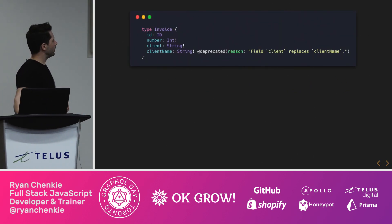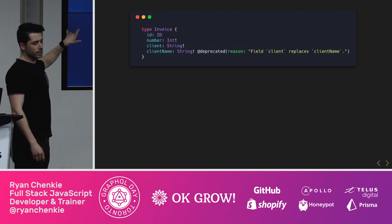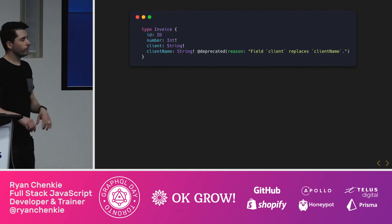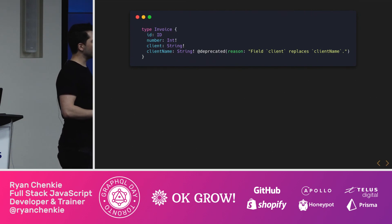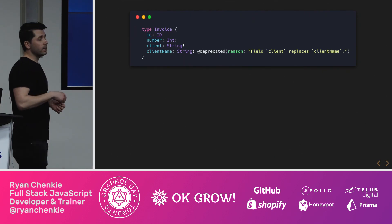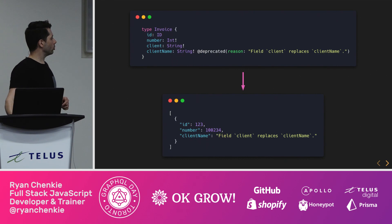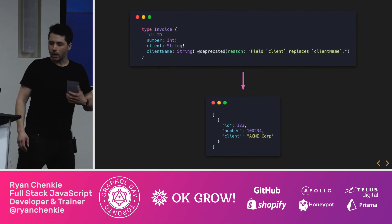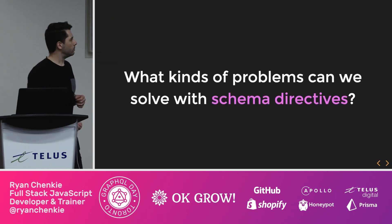Let's riff on that deprecated scenario. Say we've got this invoice type with a 'client name' field, and we want to deprecate it — we want to start using a different field name for that same piece of data. What we can do is use a deprecated custom schema directive to give back a message. So instead of immediately breaking anybody who's trying to use that field, we can send them back a message telling them to use another field instead. Here's what it would look like if that field were queried for, so the consumer can update their queries accordingly.